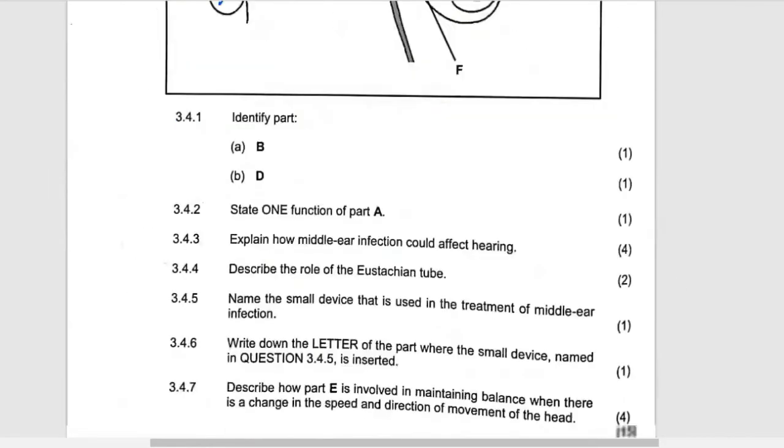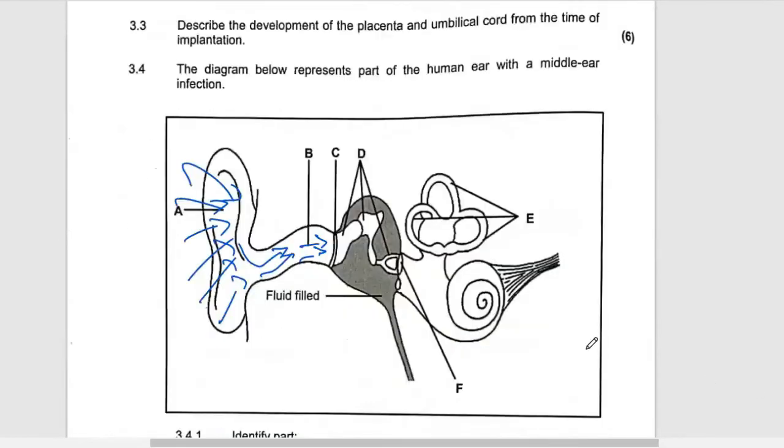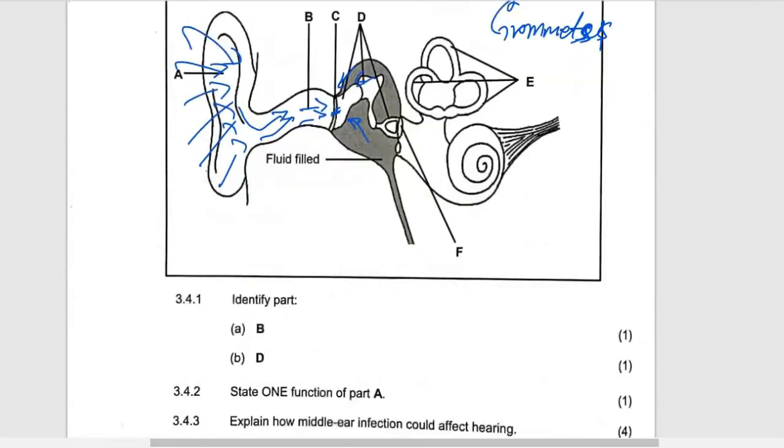Name the small device used to treat middle ear infection. This device is supposed to cut here and suck all the fluid which is inside. After that we put that small device so it can drain and make the middle ear dry. We call them grommets. Remember the middle ear infection is caused by bacteria, so you can also apply antibiotics, but they only asked for the device.